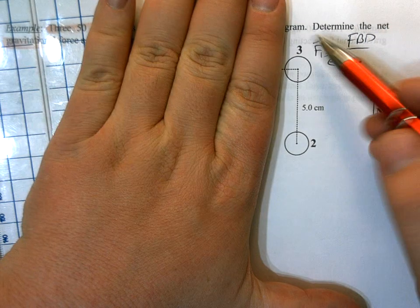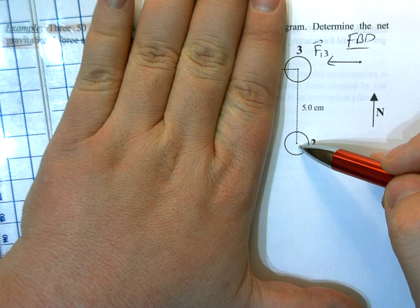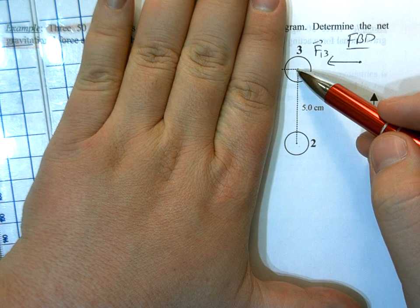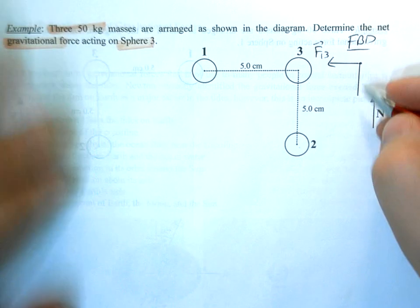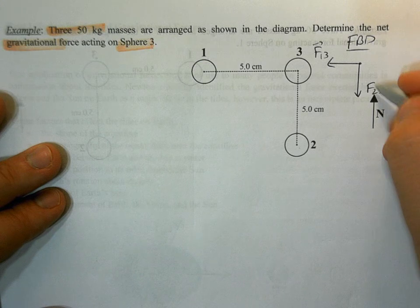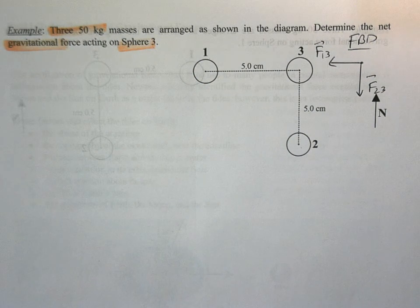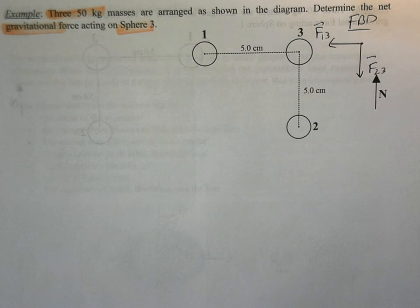Now ignoring 1, because of this body 2 here, mass 2, 3 is going to want to be attracted towards 2. So we're going to say that the force of 2 on 3 is going to be south. So that's our free body diagram.